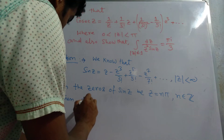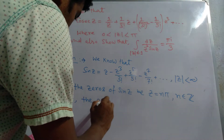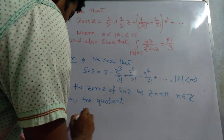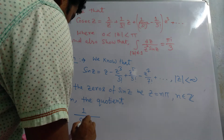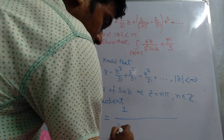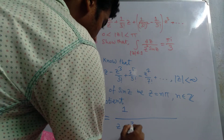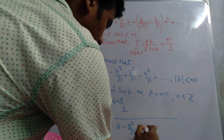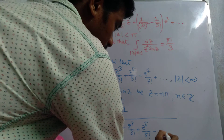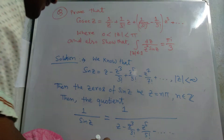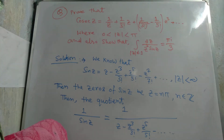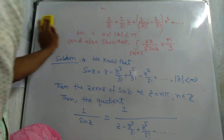Then the quotient 1/sin z equals 1 divided by (z minus z³/3! plus z⁵/5! minus dot dot dot). This has a Laurent series expansion.